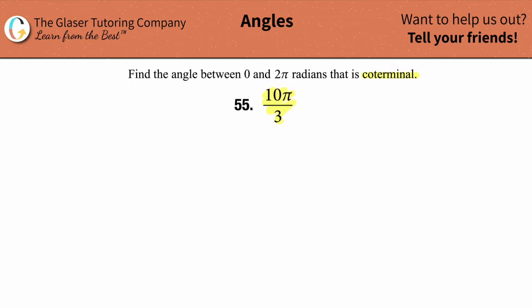Alright, so first thing is let's draw a coordinate system with our radian measures. Since we're talking about a positive angle here, we know we're rotating counterclockwise around the coordinate system.